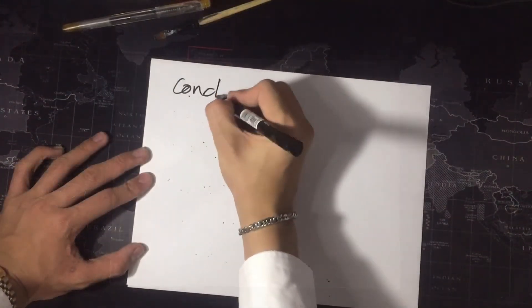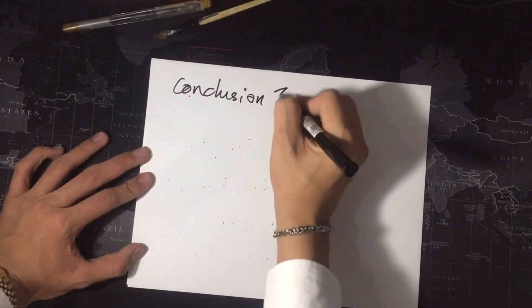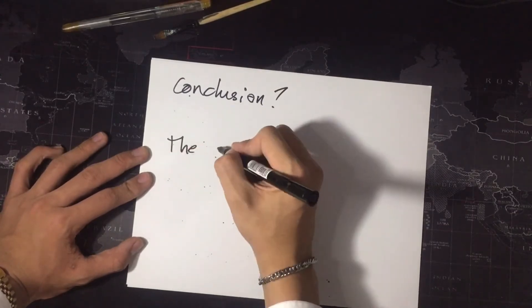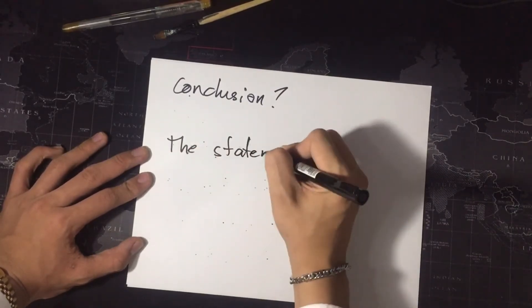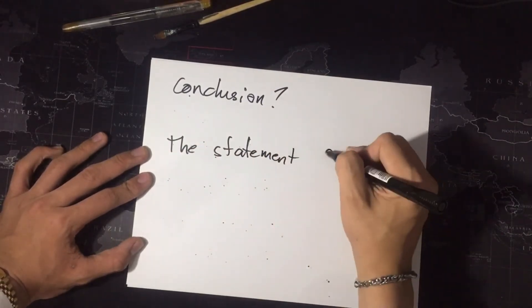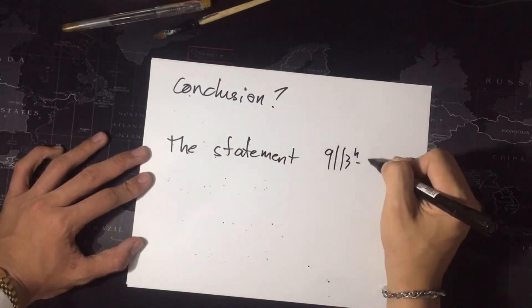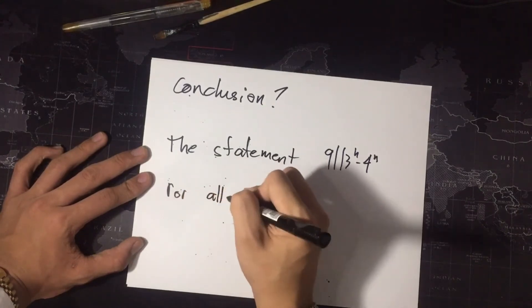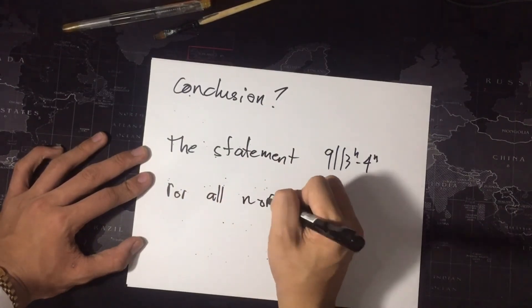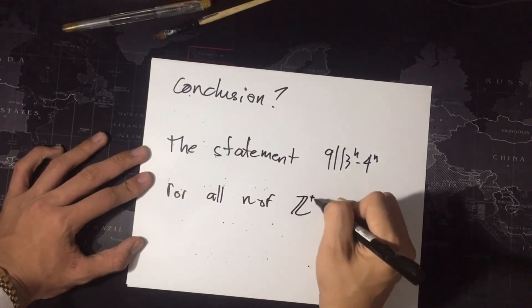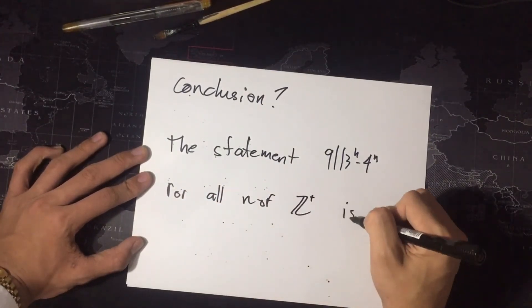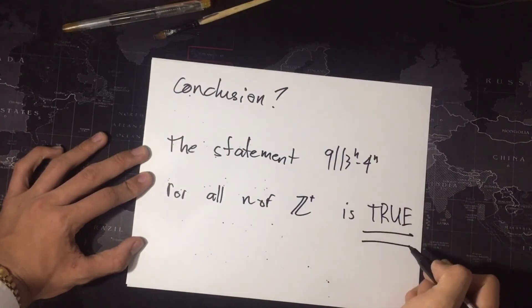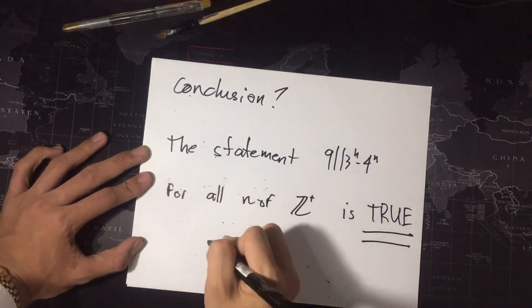Step 4 is the conclusion. The statement that 9 is divisible by 13 raised to n minus 4 raised to n, for all positive integers, is true.